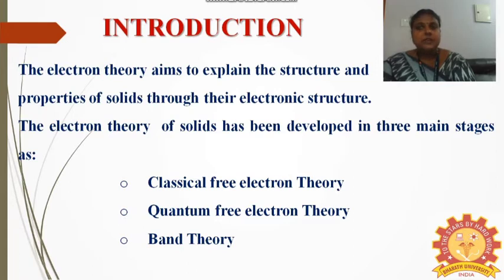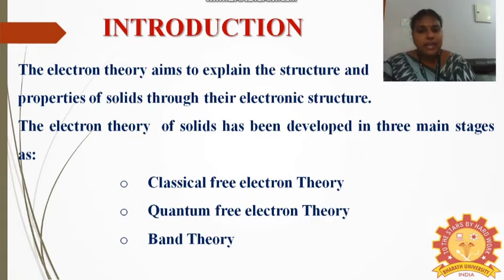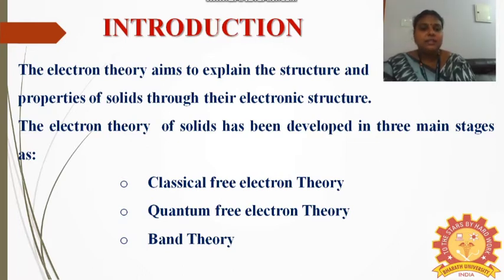After the discovery of electron, scientists were very interested to know about the electrical and thermal properties of the electrons. Based on their interest, all these three theories arose, and in general, these three theories are called the basic free electron theories. This electron theory mainly aims to explain the structure and properties of solids through the electronic structure. Hence, the electron theory of solids has been developed in three main stages.